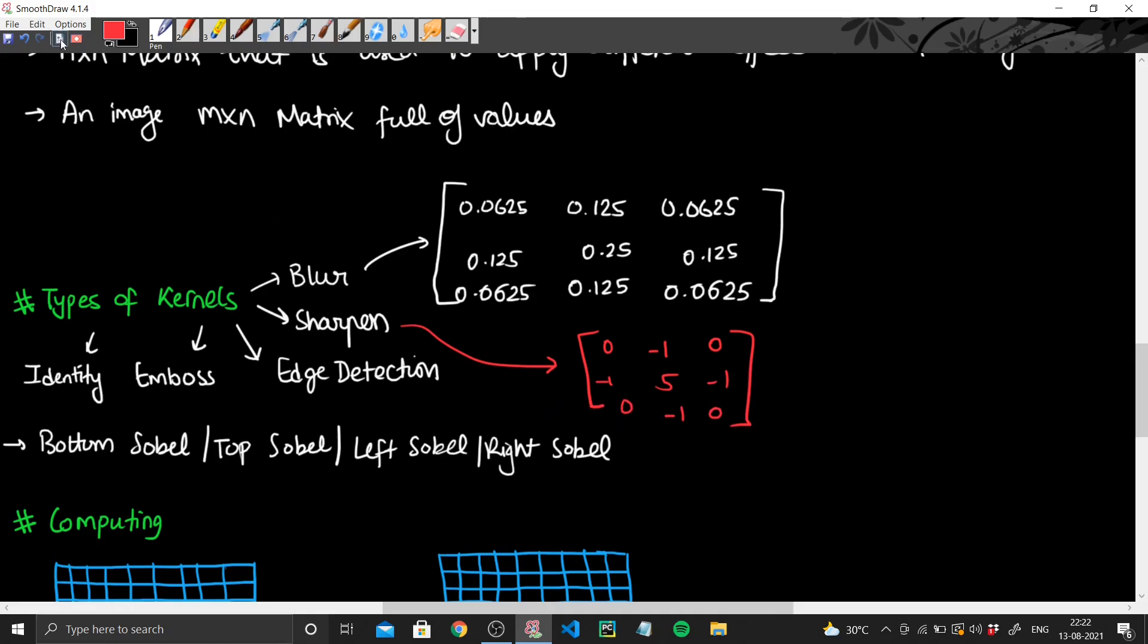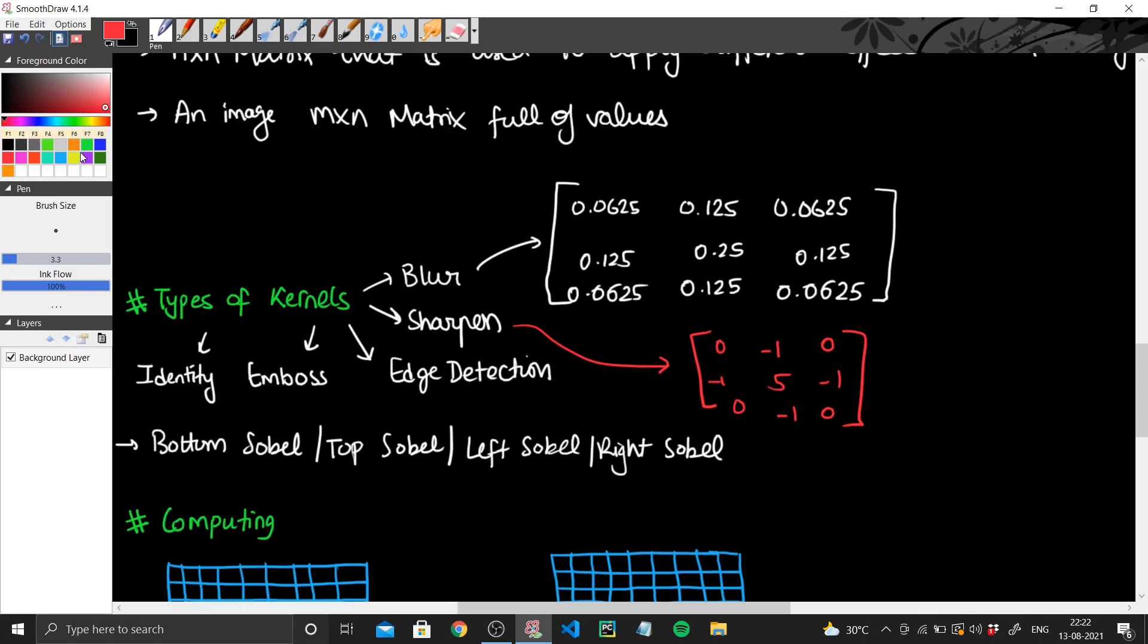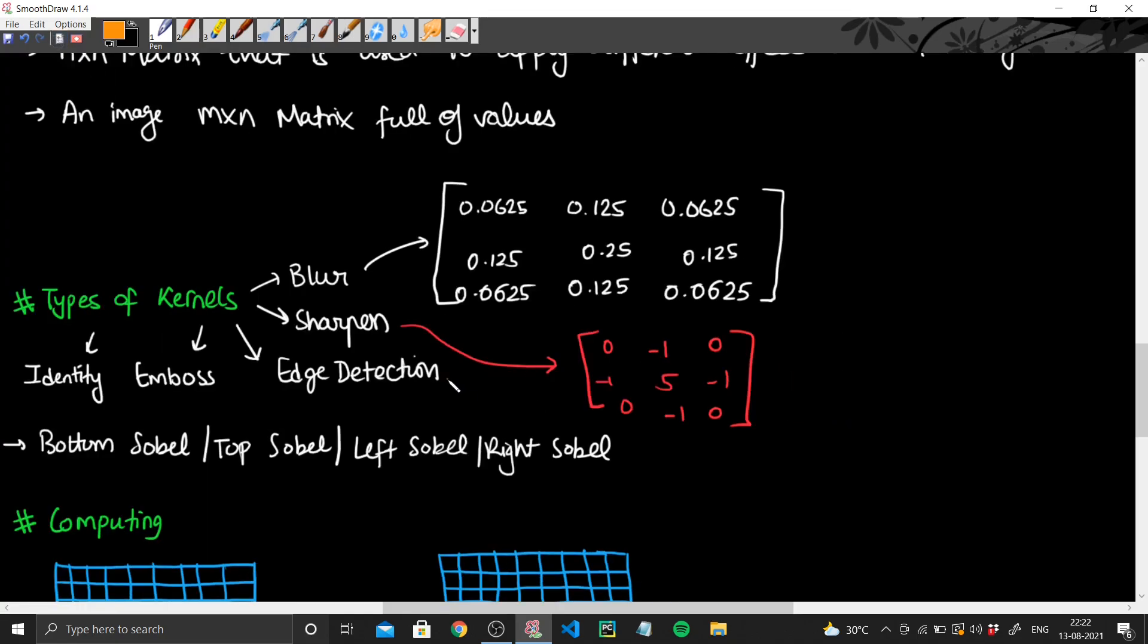And if we talk about edge detection, I'll use another color, let's say I'll use orange maybe. And if we talk about edge detection, we have the kernel 0, minus 1, 0, minus 1, 4, minus 1, 0, minus 1, 0.